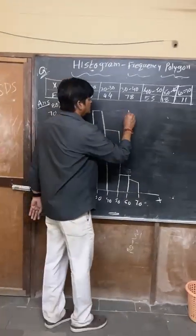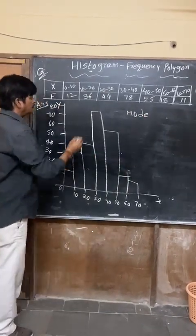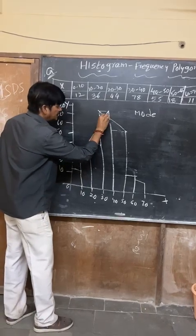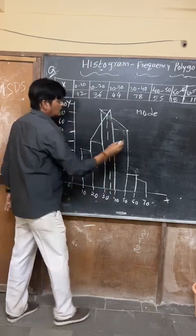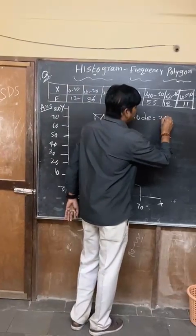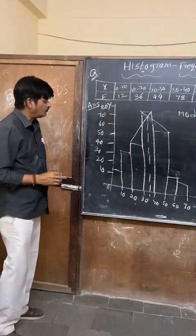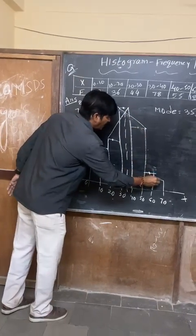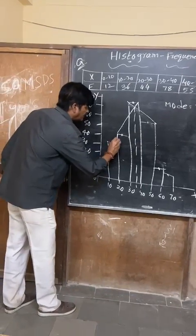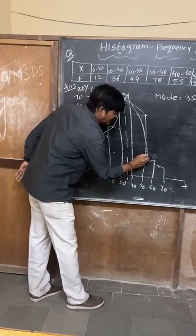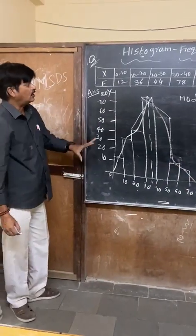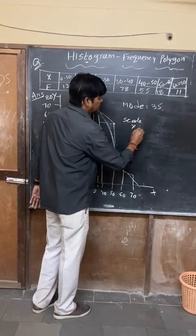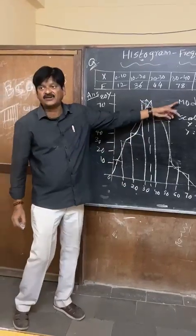Histogram and the mode — if they ask you to locate the mode, you can connect these two diagonal edges of the tallest bar to the adjacent bars. Mode is between 30 and 40 — it may be approximately 35 or 36. I hope you understood this.